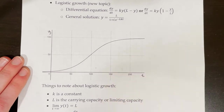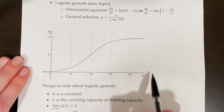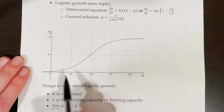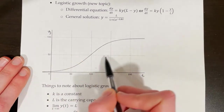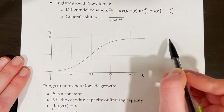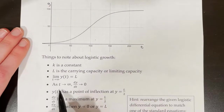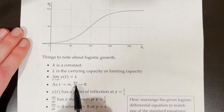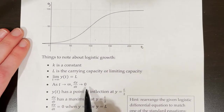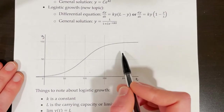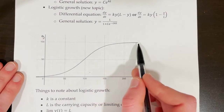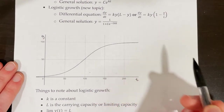In this case, our carrying capacity is equal to 100, because as t approaches infinity and t gets bigger and bigger, y gets closer and closer to 100. As t approaches infinity, dy/dt also gets closer and closer to zero, because we see that graph leveling off and the slopes of the tangent lines are getting closer and closer to zero.